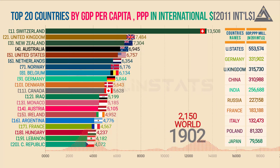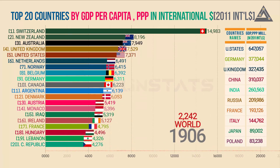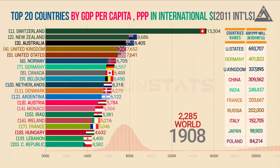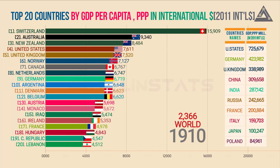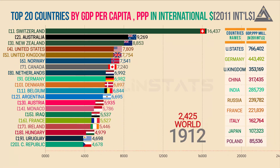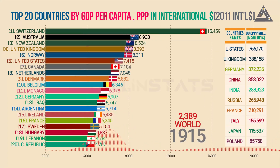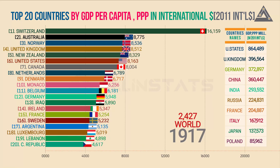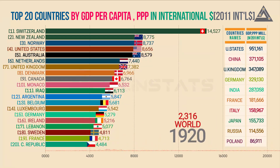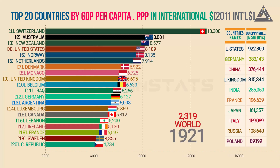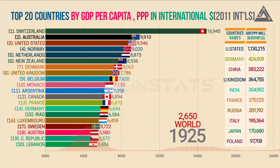Before the modern era of economic growth, the economy worked very differently. Not technological progress, but the size of the population determined the standards of living. In the very long time in which humanity was trapped in the Malthusian economy, it was births and deaths that determined incomes. More births meant lower incomes; more deaths meant higher incomes.